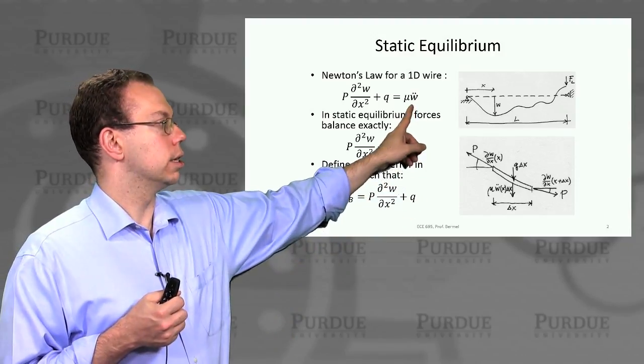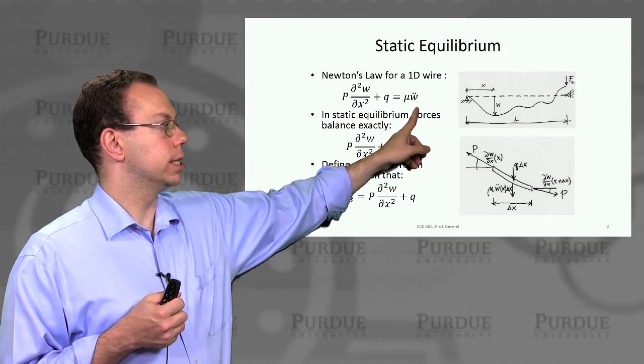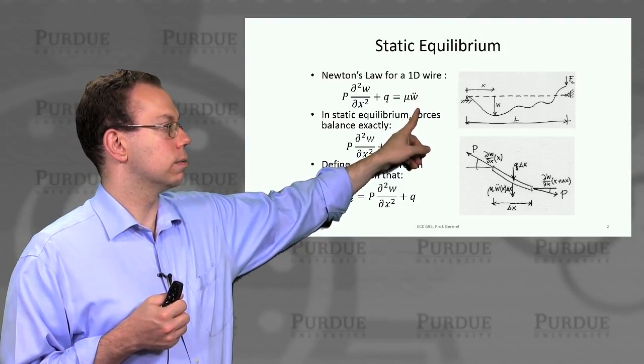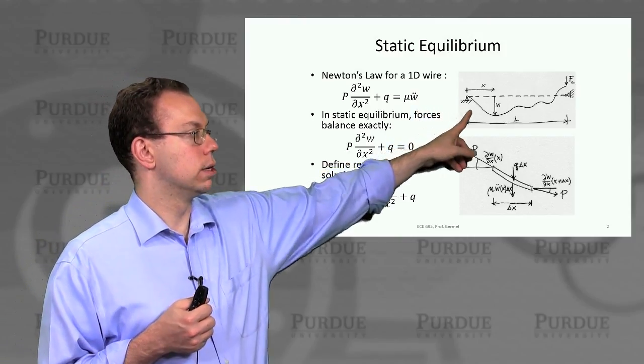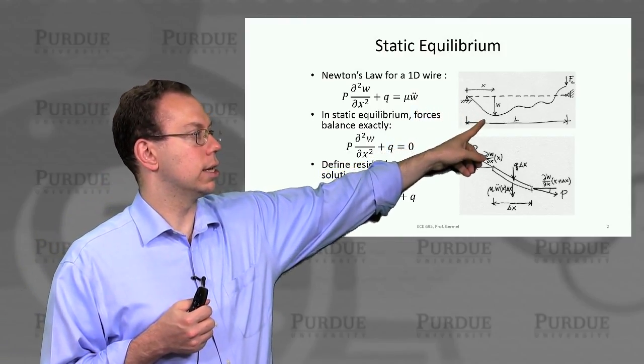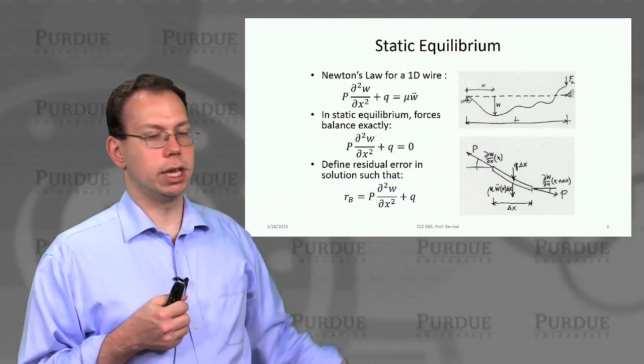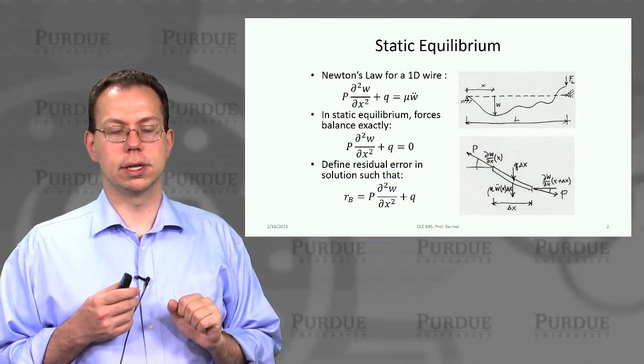This equals the mass density mu times the acceleration in the y direction, which is the second derivative of W. This is the drawing from Peter Kristol's book that shows how this works.